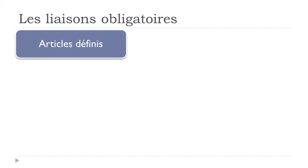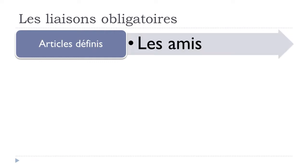The first situation when you should make a liaison is with articles définis — le, la, les, meaning 'the' in English. When you get the plural form 'les', it ends with S. If the word after starts with a vowel, like 'amis' (friends), you should make the liaison: les amis.